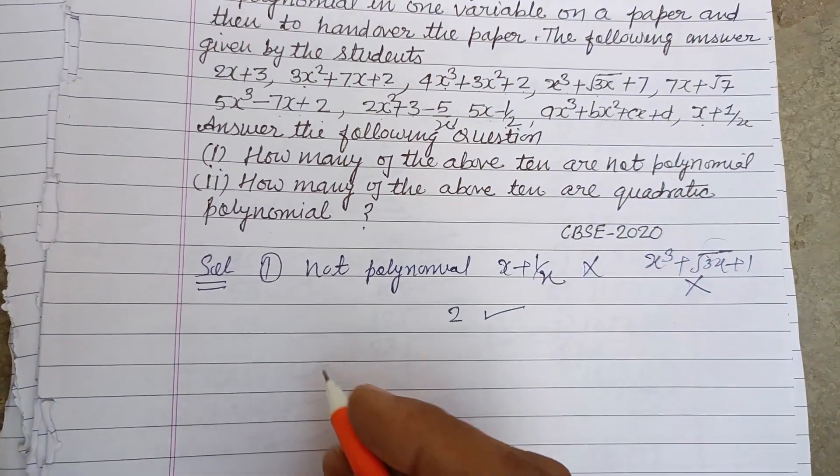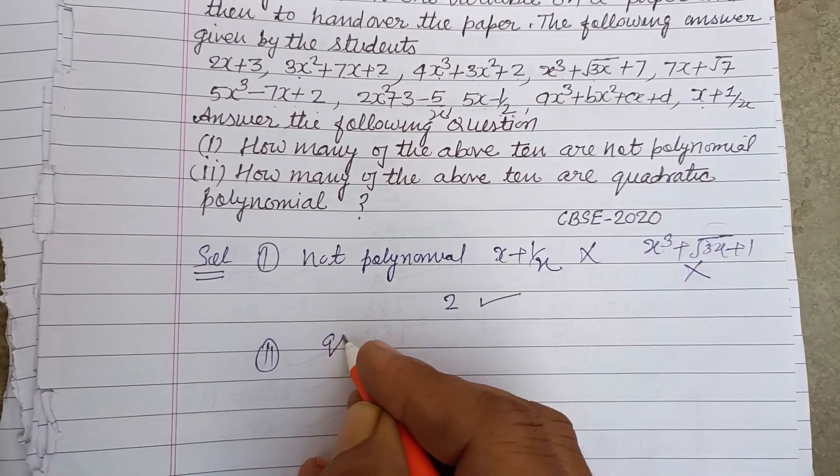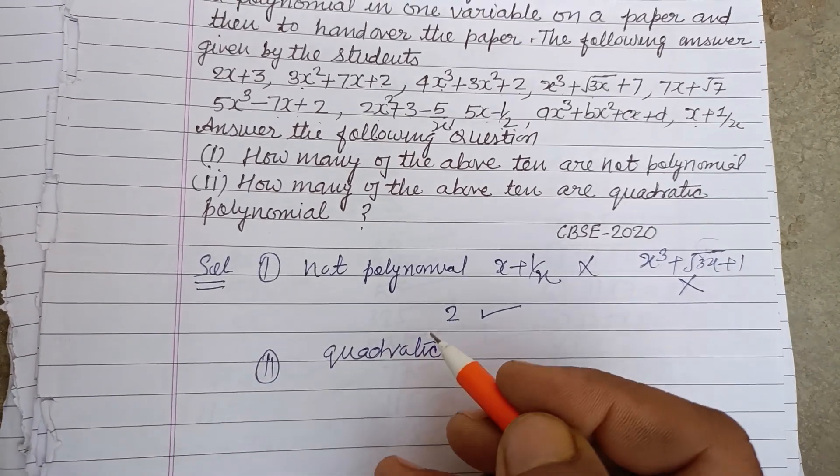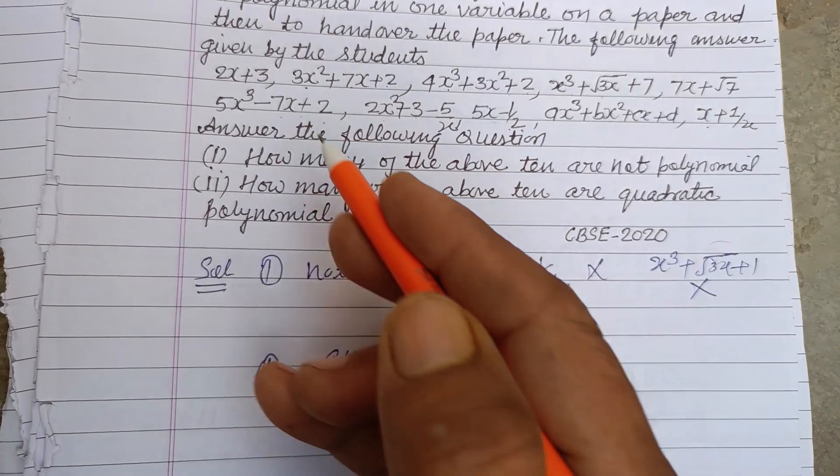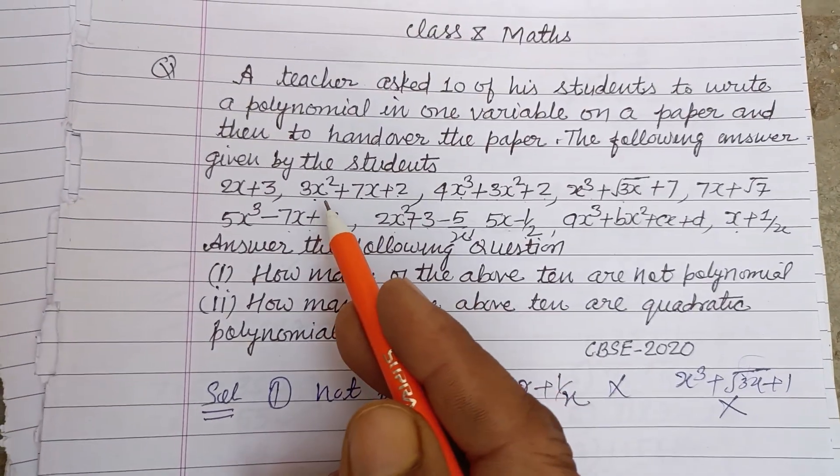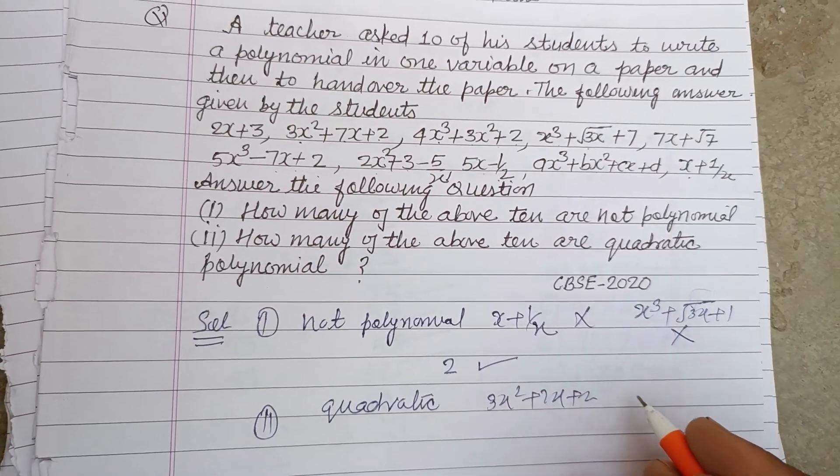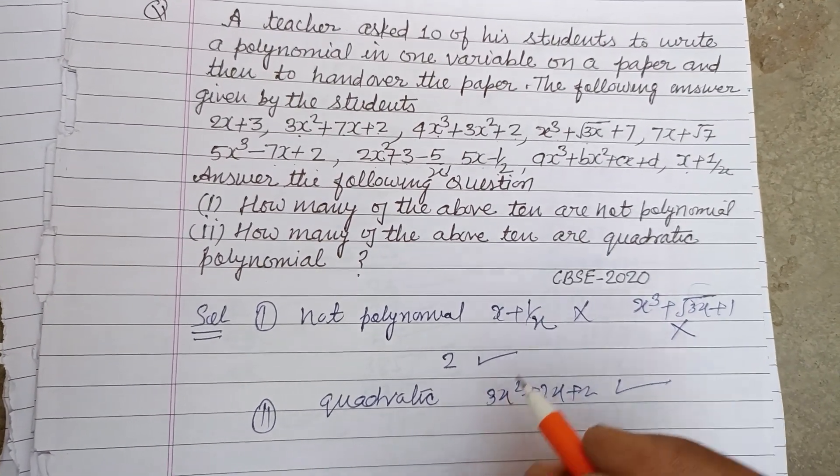How many of the above are quadratic polynomials? Quadratic polynomials are those polynomials which have greatest power 2. So here, 3x² + 7x + 2 is called a quadratic polynomial.